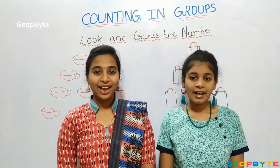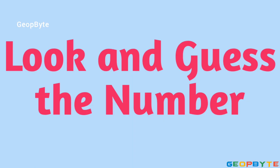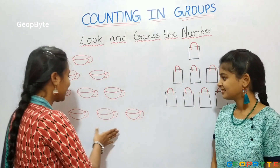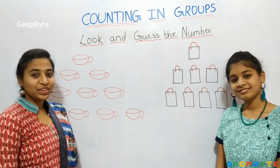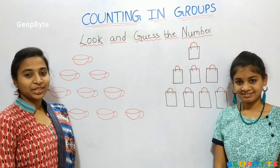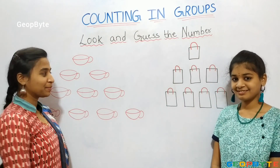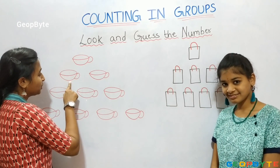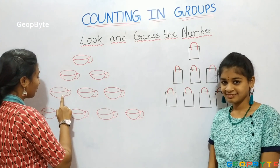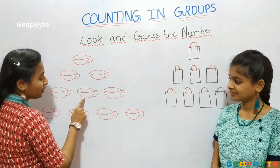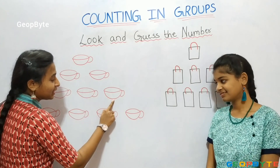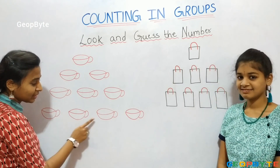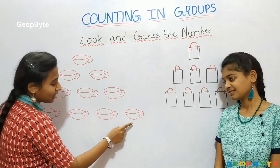Look and guess the number. Hey kids, see here. I have few cups. Now, let us count them and write the number. 1, 2, 3, 4, 5, 6, 7, 8, 9, 10.